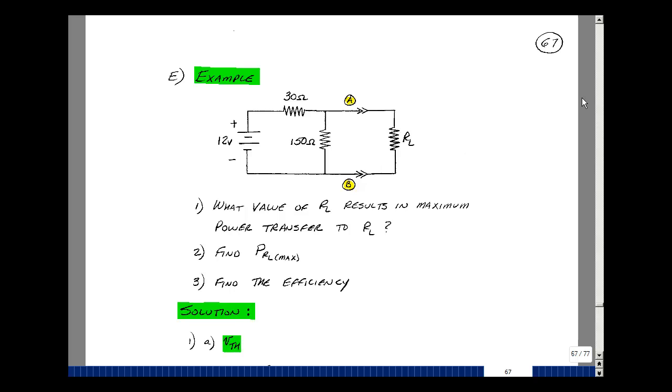Consider the following example where I've got one voltage source and three resistances. What value of R-sub-el would result in the maximum power being transferred to R-sub-el? Also, what will be the value of that power? And lastly, what's the efficiency of the circuit? In other words, what's the power out over the power in?